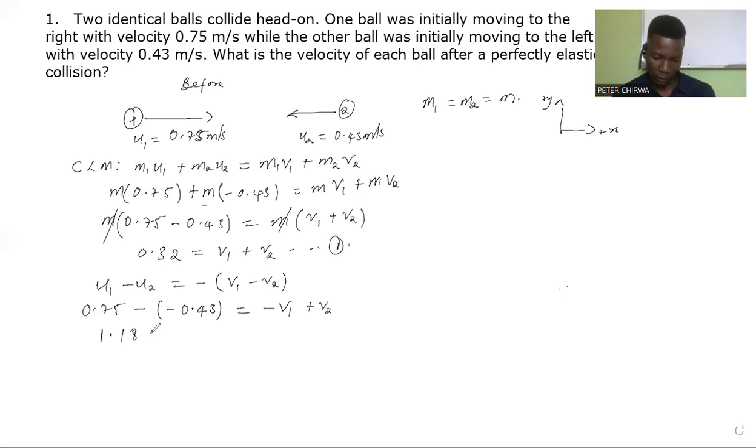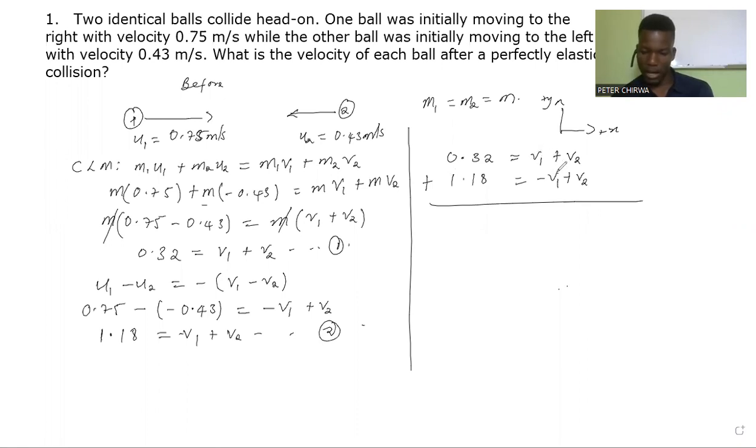We have two equations now. These two equations we can solve them simultaneously using the elimination or substitution method, whichever way. For me, I'm going to use elimination. I add these equations and you can see that v1 is going to eliminate, so we have 0.32 plus 1.18.